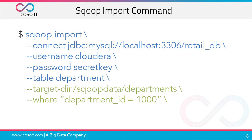The --where parameter is used to import only a subset of data — for example, you want to import just the data of departments where department_id is equal to 1000. Then the -m parameter is used to specify the number of map tasks. By default Sqoop creates 4 map tasks, but using the -m parameter we can control the parallelism and define the number of mappers we want.